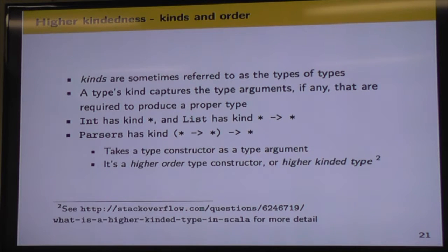Parser's kind is star to star to star. So in parentheses there, our star to star is another type constructor. In this case, parser. So if we think about our type constructors as being like functions at the type level, and we know that a higher order function is one that takes other functions as arguments, then we can look at parsers as a higher order type constructor. And another name for that is a higher kinded type.